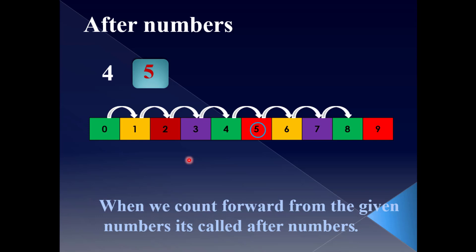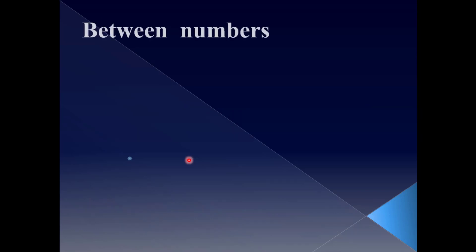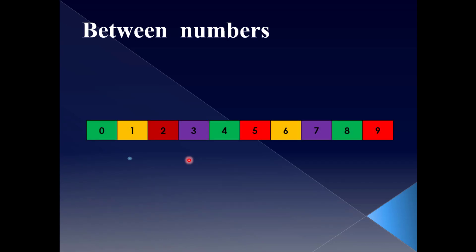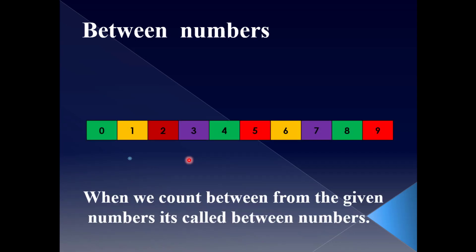And 8 is bigger than 7, and 9 is the biggest number in the number strip. Between numbers — what do you mean by between numbers? We can understand through the number strip. When we count between from the given numbers, it's called between numbers. What comes between 4 and 6? We have to circle 4 and 6. Yes, we got the number 5 — 5 comes between 4 and 6.